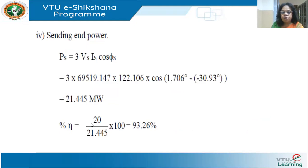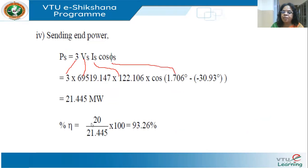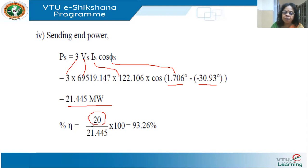The sending end power: PS = 3·|VS|·|IS|·cos(angle of VS - angle of IS). The angle of VS is 1.706° and the angle of IS is -30.93°, giving PS = 21.445 MW. The efficiency of the transmission line is: output/input = 20/21.445 × 100 = 93.26%.